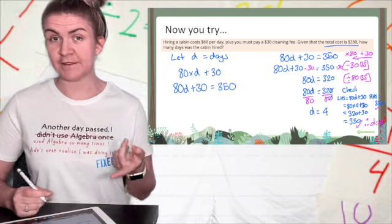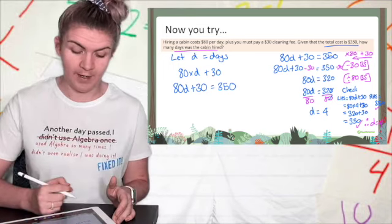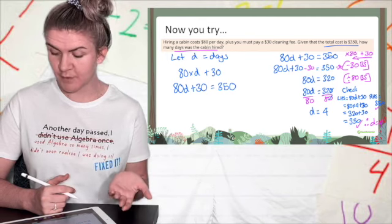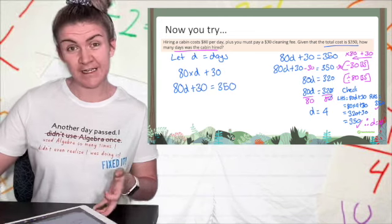All right, first of all, I need to check that I'm answering the correct question, which this one says how many days was the cabin hired, and my d equals days, and I figured out days. So it's 4. Second thing is I need my units, which is days, and I need to write a sentence.